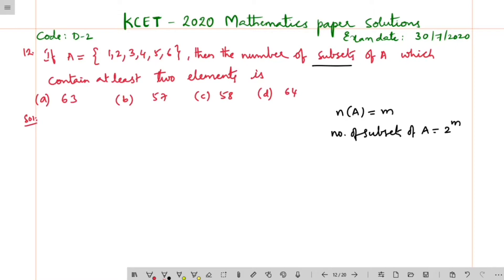So here in this set A is given {1, 2, 3, 4, 5, 6}, so the number of elements in set A is 6.